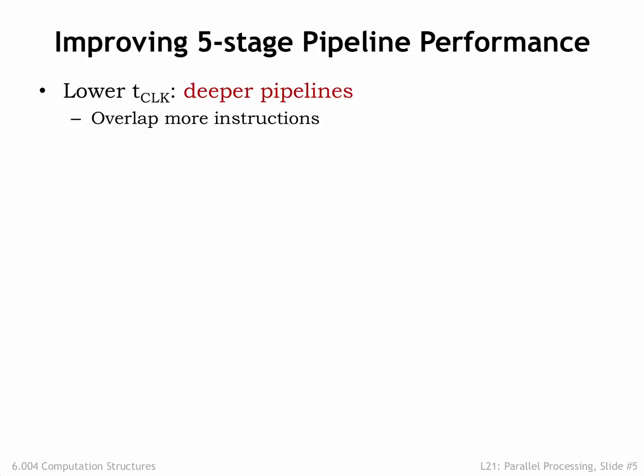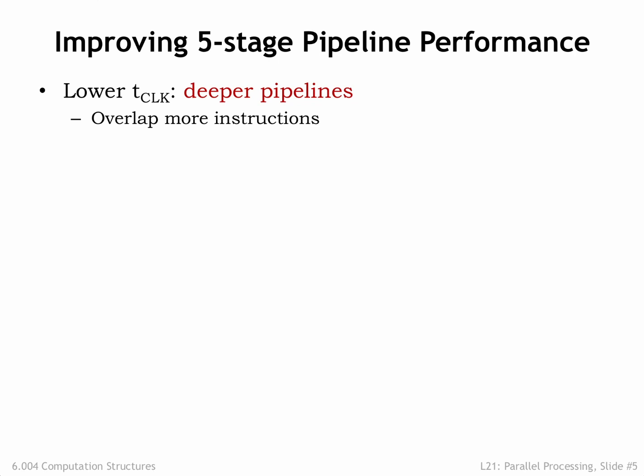Increasing the number of pipeline stages should allow us to decrease the clock cycle time. We add stages to break up performance bottlenecks — for example, adding additional pipeline stages to allow a longer time for memory operations to complete. This comes at a cost to CPI stall, since each additional MEM stage means that more NOOP bubbles have to be introduced when there's a load data hazard. Deeper pipelines mean that the processor will be executing more instructions in parallel. Let's think about limits to pipeline depth.